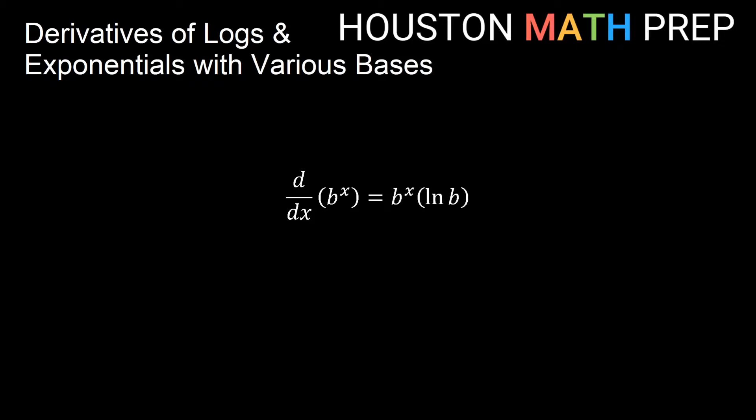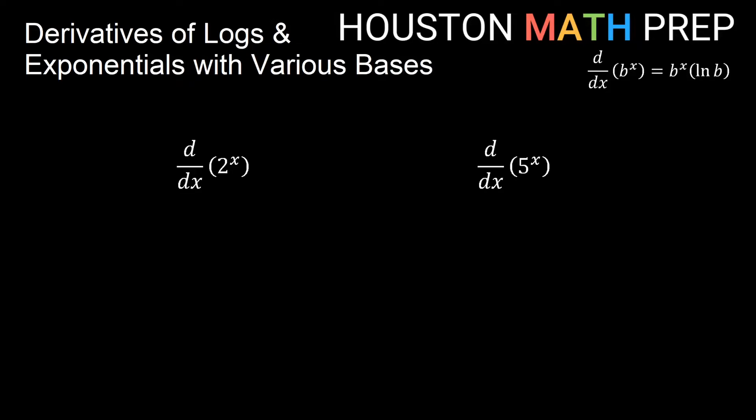So if we have the derivative with respect to x of some base to the x — some b to the x — then the formula for that derivative is the original b to the x, where b is the base, times ln of the base. We'll keep our formula handy up here and go ahead and do some of these.